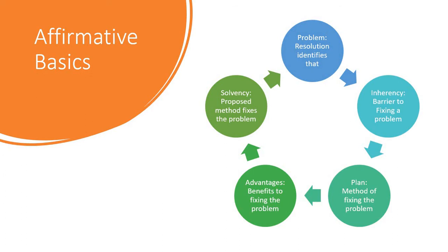The problem area this affirmative deals with is the use of water in hydraulic fracturing. The inherency contention describes the barriers that prevent the status quo from resolving that problem on its own, because if the status quo was going to fix it, the affirmative doesn't need to change it by proposing a policy action — which is what the plan is. The advantages, sometimes called harms, identify the benefits to fixing that problem. The solvency arguments argue that the proposed plan fixes the problem. Altogether, these show there's a problem, we aren't fixing it now, we have a proposed solution, and it will create benefits.